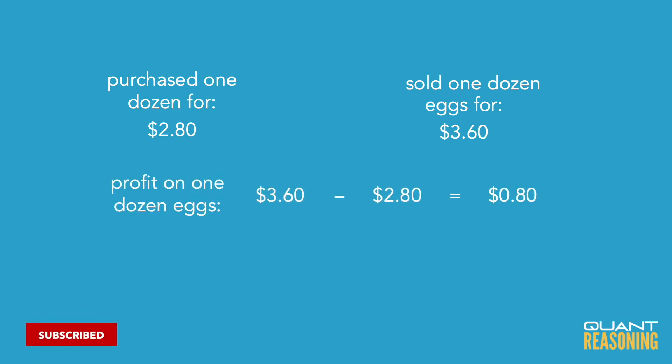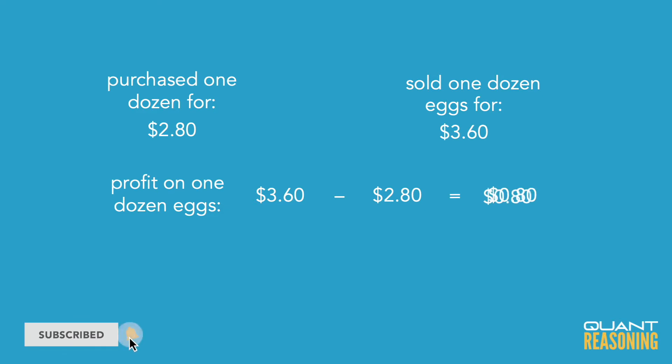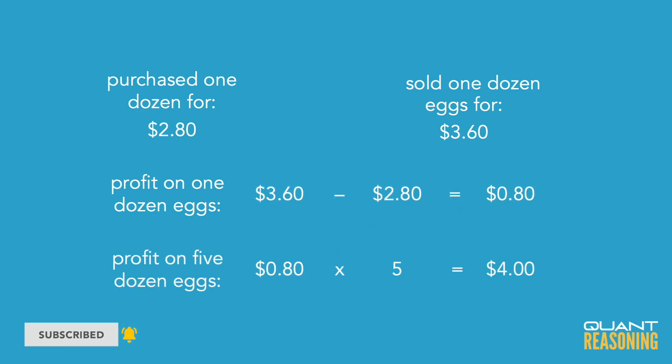The question wants to know what was our profit on five dozen eggs. Take that 80 cents profit and multiply it by five, and you get the answer: four dollars.